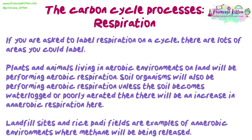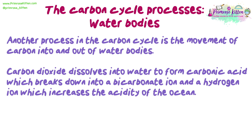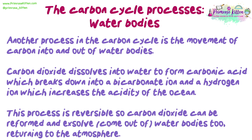Landfill sites and rice paddy fields are examples of anaerobic environments where methane will be released. Another process in the carbon cycle is the movement of carbon into and out of water bodies. Carbon dioxide dissolves into water to form carbonic acid, which breaks down into a bicarbonate ion and a hydrogen ion, increasing the acidity of the ocean. This process is reversible, so carbon dioxide can be reformed and come out of water bodies too, returning to the atmosphere.